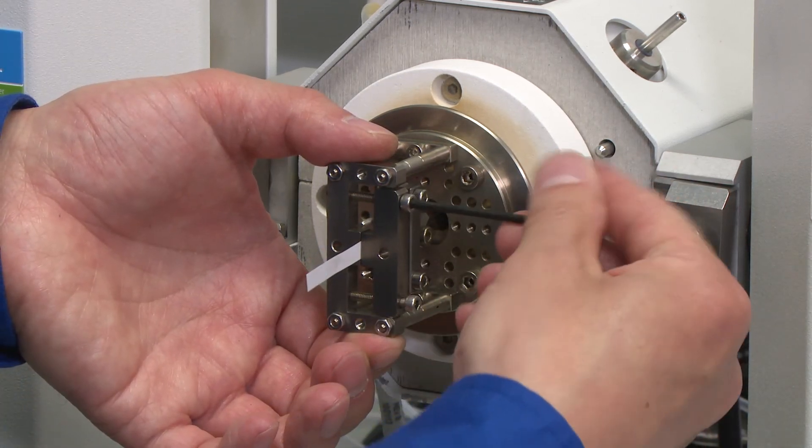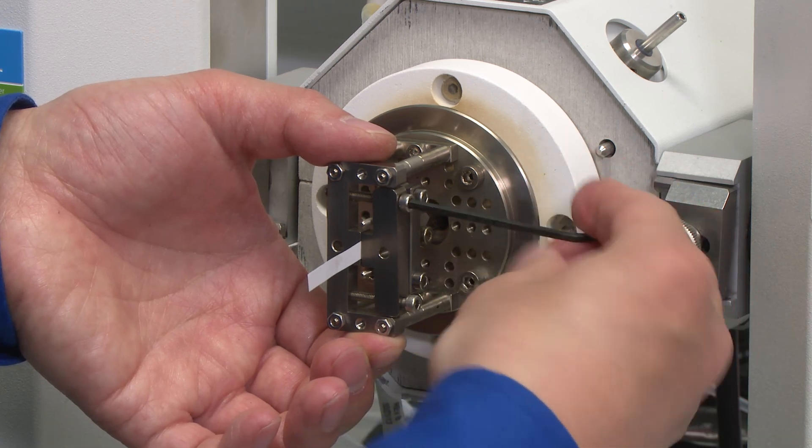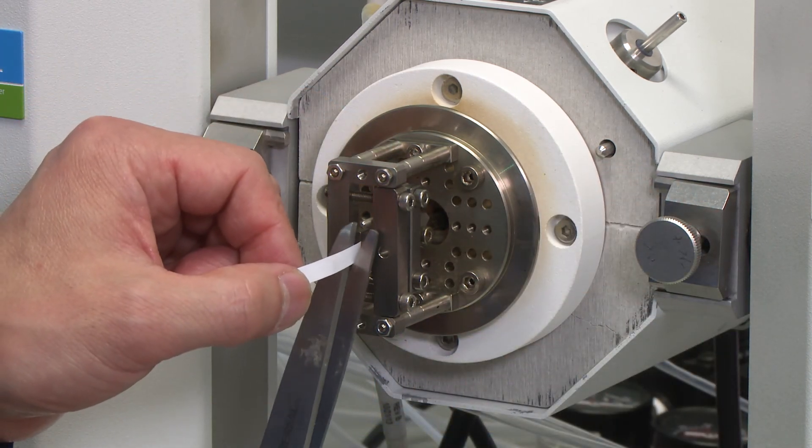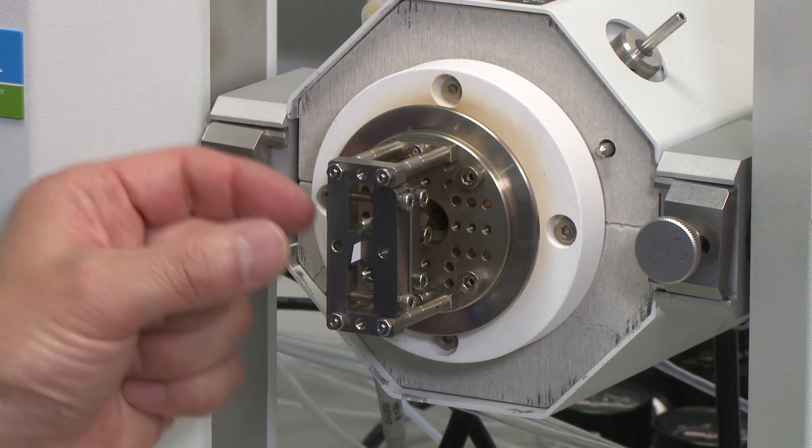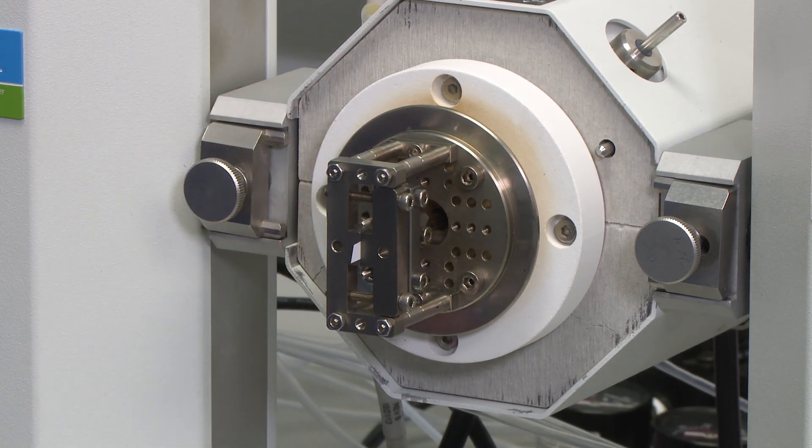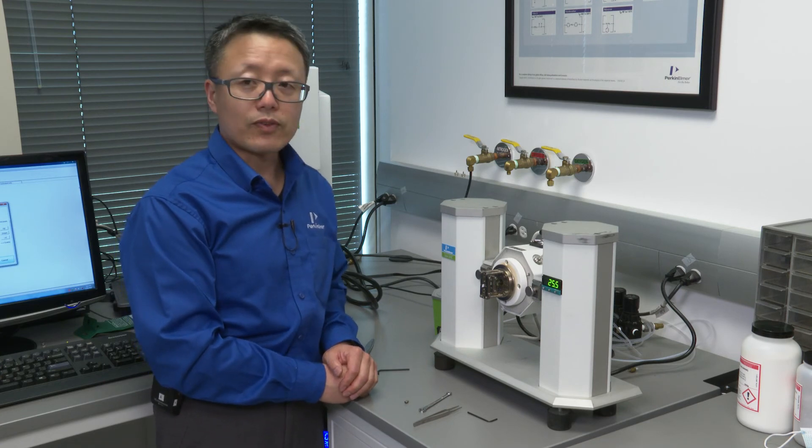Now we can tighten the outer clamp and cut the sample to remove the excessive part, and use a caliper to measure the sample length and enter that into the software.